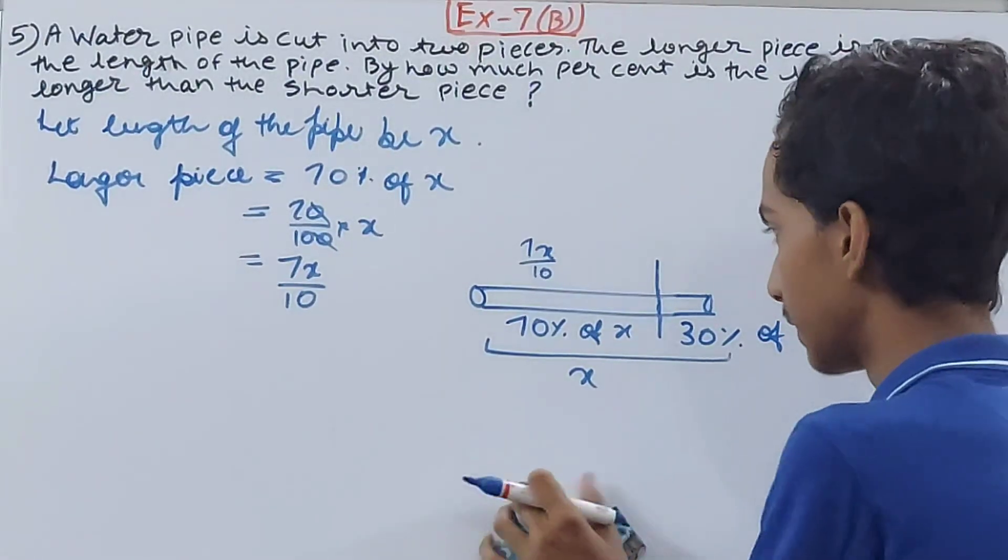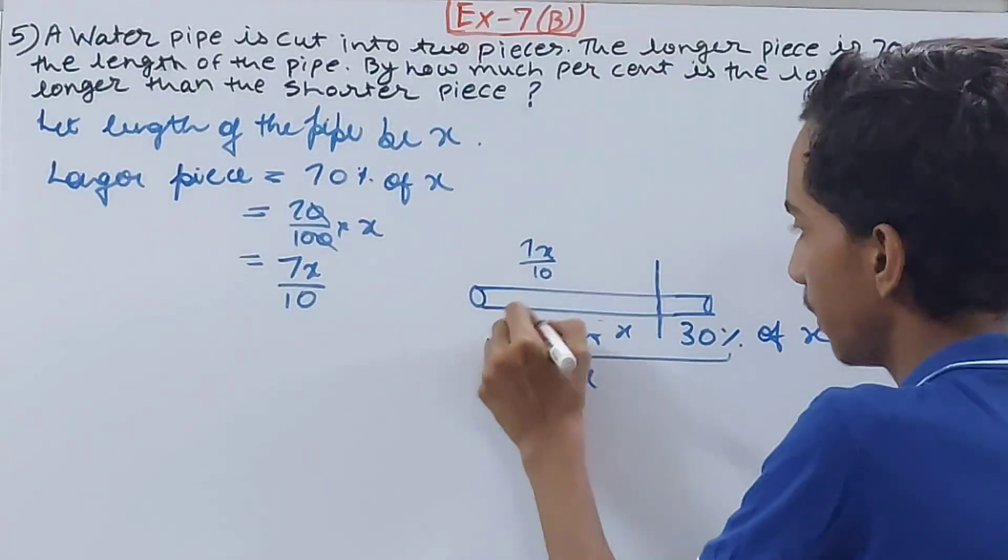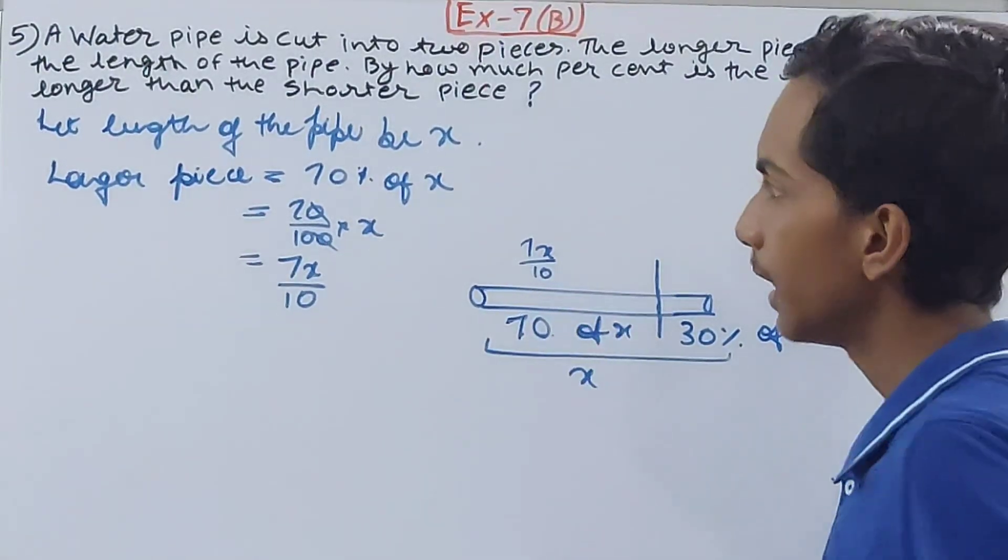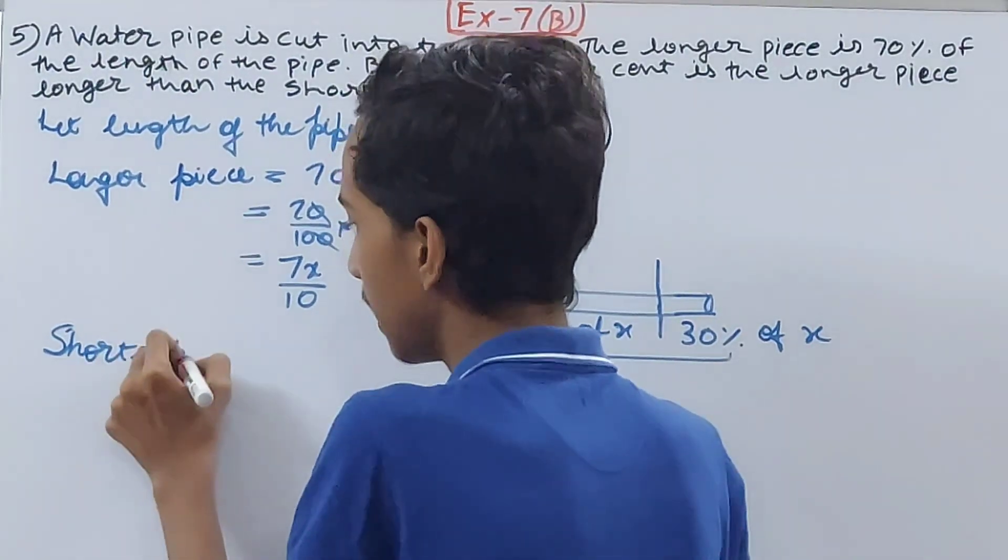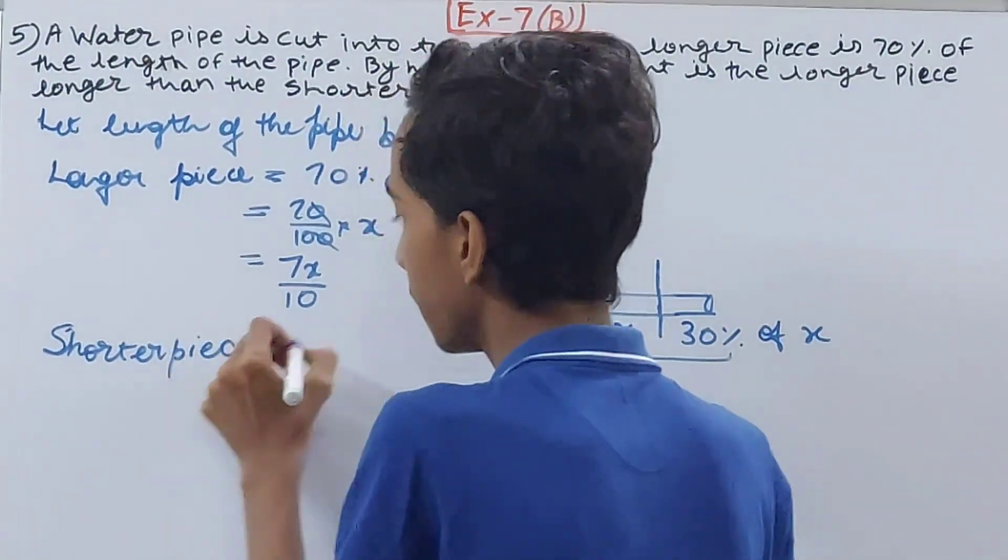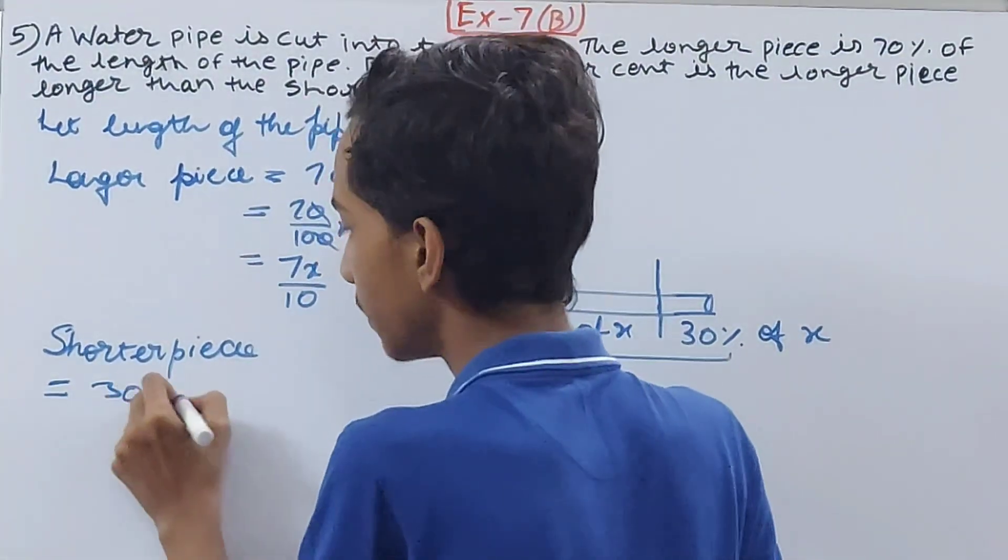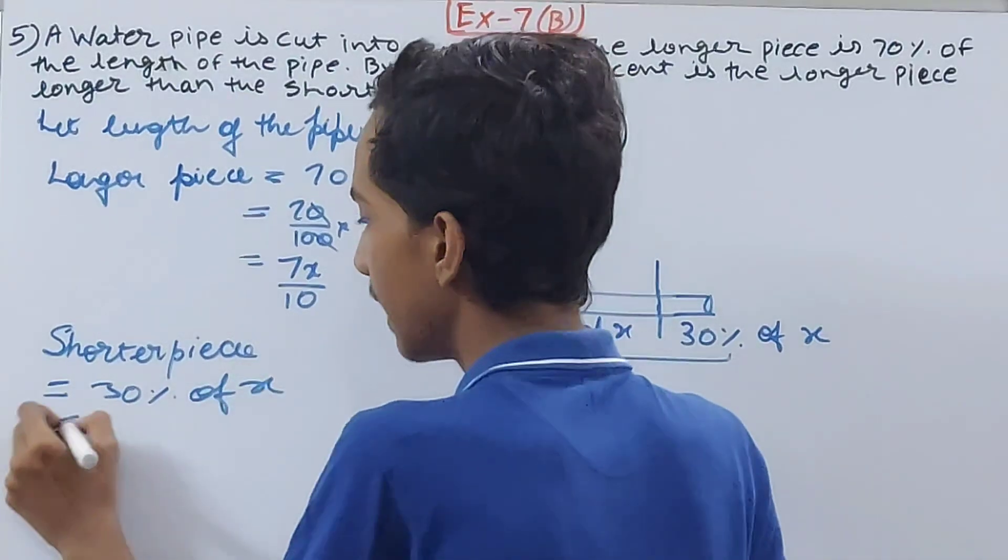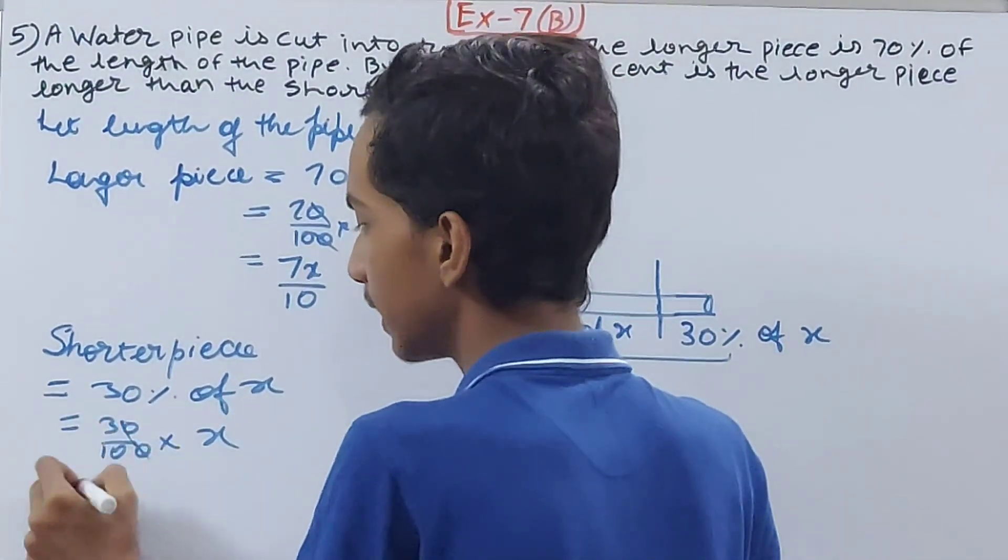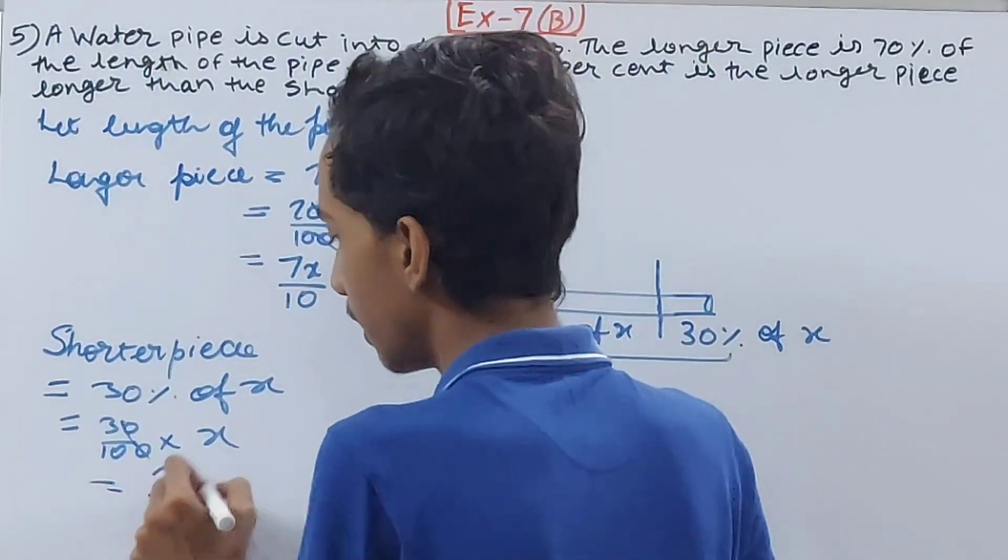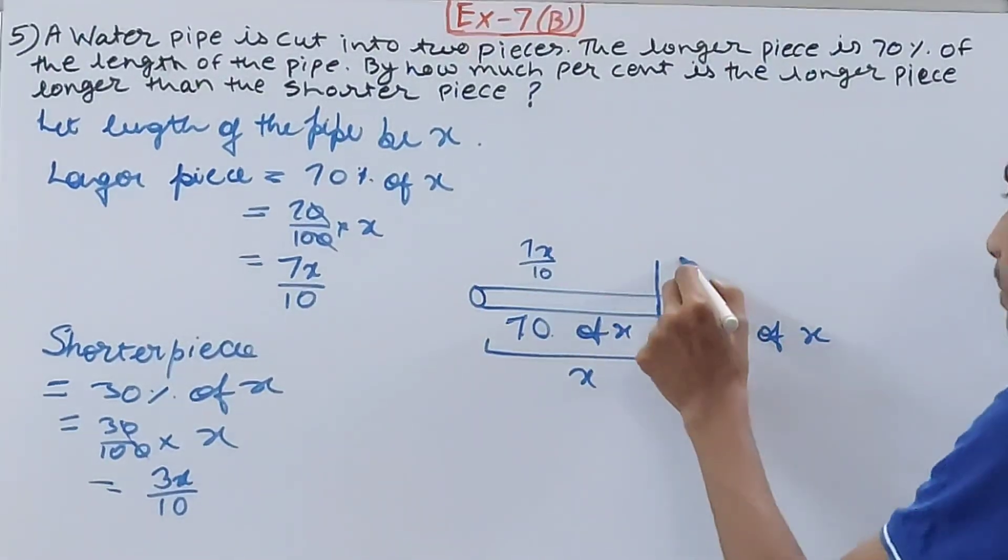Now come to the shorter piece. The shorter piece is 30% of x. This is in length 30% of x, that is 30/100 × x. Again cancel, 3x/10. So this is the length of the shorter piece, this is the length of the longer piece: 3x/10.